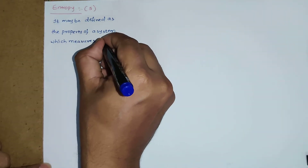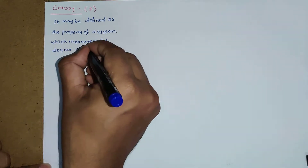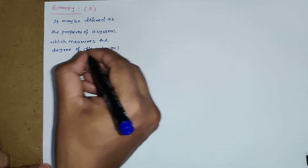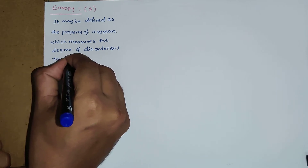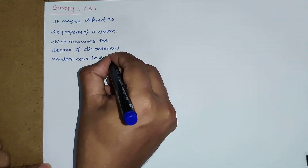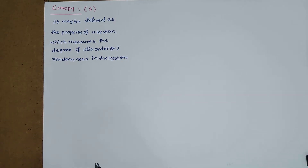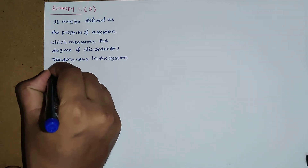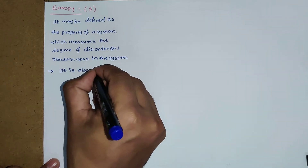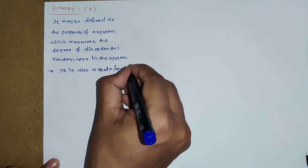Entropy may be defined as the property of a system which measures the degree of disorder or randomness of a system. Like internal energy and enthalpy, it is also a state function — it depends upon the initial state and final state of the system.